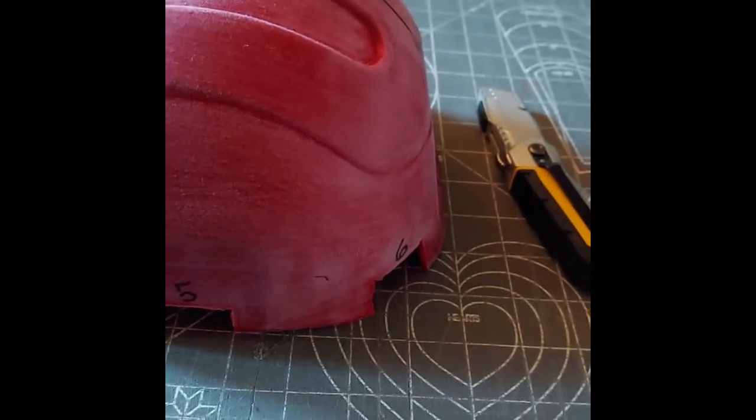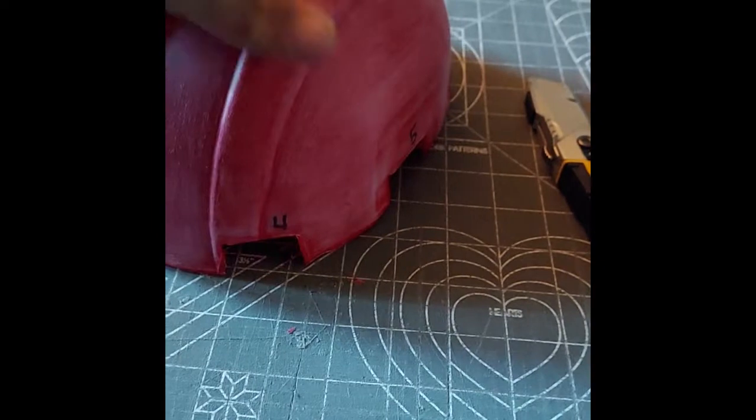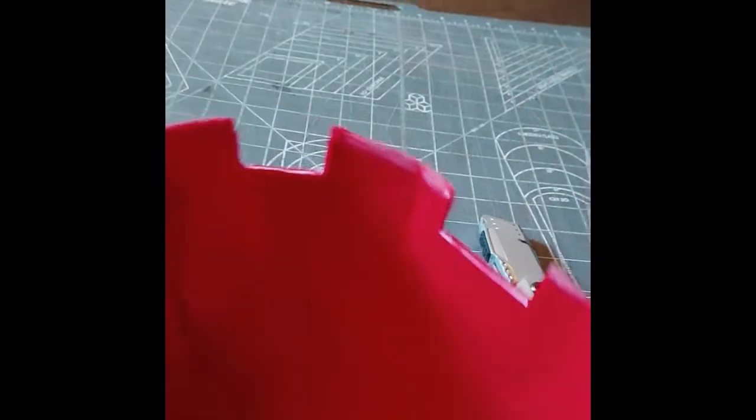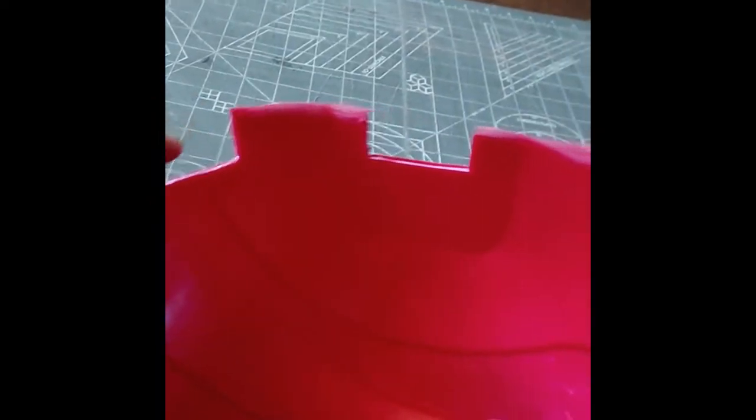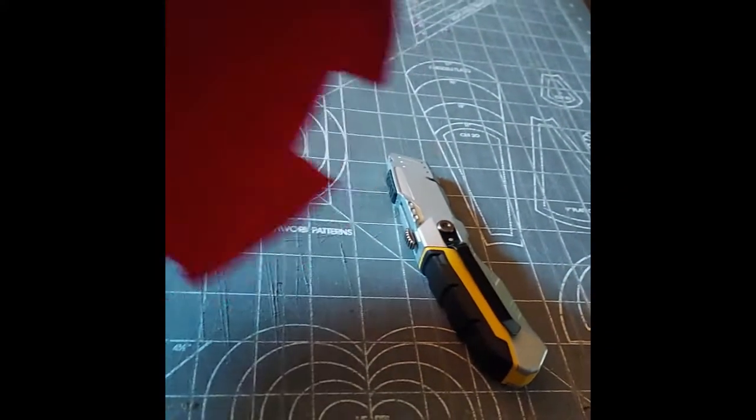Alright, so now all the pieces are cut out here. As you can see, there's a little bit of trimming on the inside because there was a little bit of plastic sticking out that I need to trim off. Now I need to take and sand these all smooth.